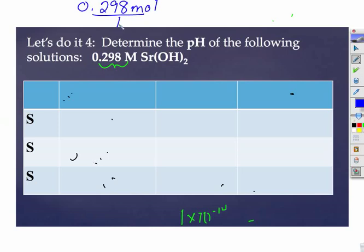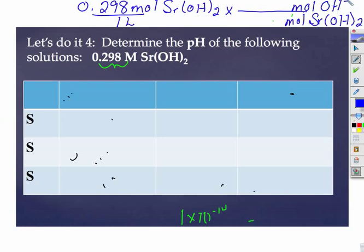So I have 0.28 moles per 1 liter. You want to label what you're talking about or you might get lost in your journey. Now, I want to eliminate moles of strontium hydroxide, and I want moles of that ion within. And that's a 2 to 1 ratio. Do that, get your pOH, get your pH, and you are good to go.